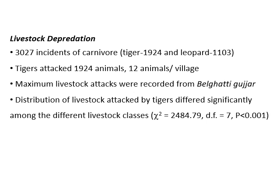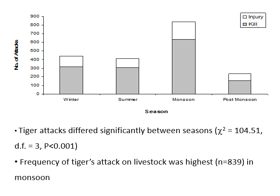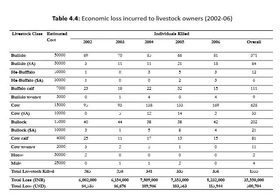The distribution of livestock attacked by tiger differed significantly among different livestock classes. Tigers attacked more cows compared to buffaloes, while horses and mules were attacked in very few cases — cows were largely killed by tigers, whereas horses and mules had very few individuals attacked. This graph shows the season-wise distribution of livestock attacked by tiger — the maximum number of tiger attacks were recorded during the monsoon, while the minimum were recorded during the post-monsoon, with a significant difference between seasons.